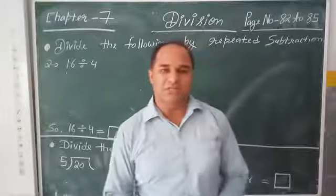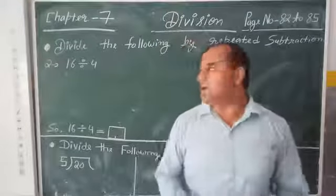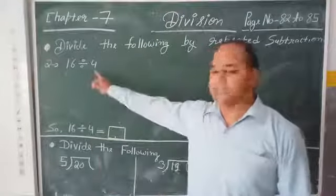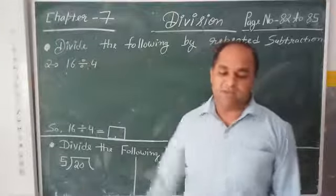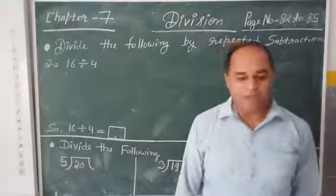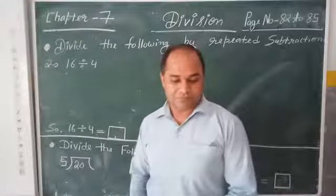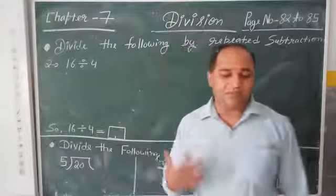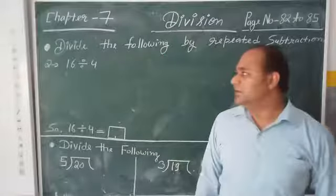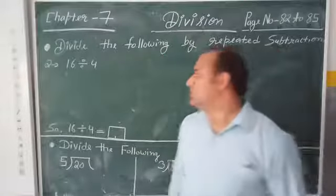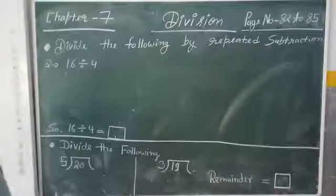The first question is already solved. So we will solve the second question: 16 divided by 4. We have to divide this by repeated subtraction. Let us begin.